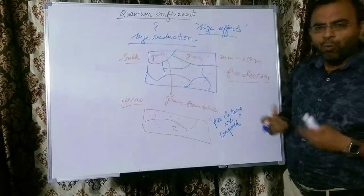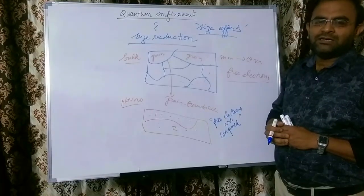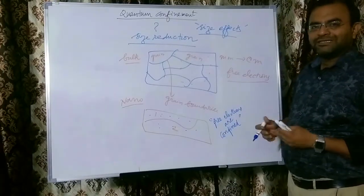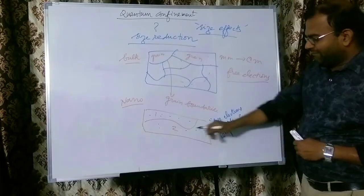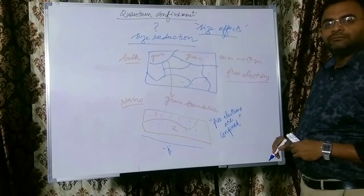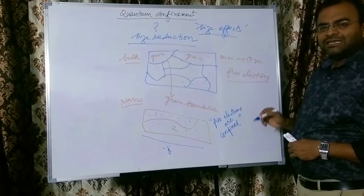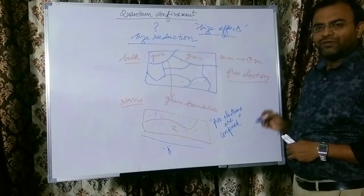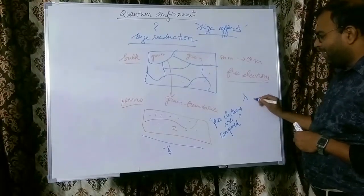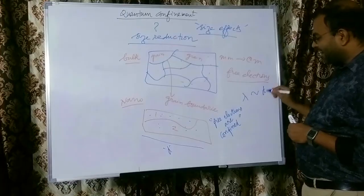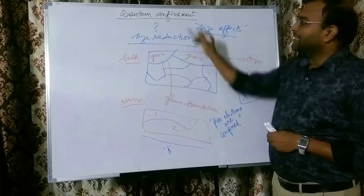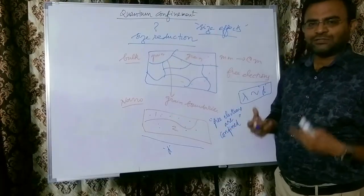Why is the word quantum used here? Why do quantum effects start dominating? When the size of the grain, let us say d, is comparable to the de Broglie wavelength of the moving electron, then quantum effects start to show up. That is, the de Broglie wavelength lambda must be comparable to the grain size. Under such circumstances, quantum effects start showing up, and the free electrons in such materials feel as though they are confined.